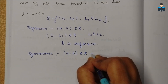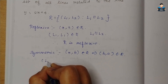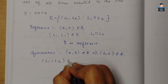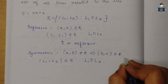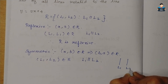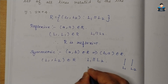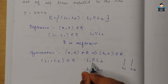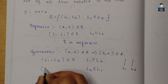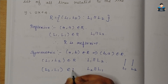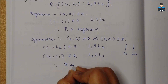Next, check the symmetric condition: if (a, b) belongs to R, this implies (b, a) belongs to R. So if (L1, L2) belongs to R, that means L1 is parallel to L2. Since L1 is parallel to L2, L2 will also be parallel to L1. So (L2, L1) belongs to R, and therefore R is symmetric.